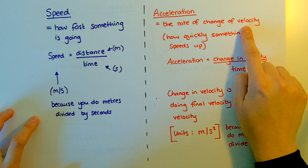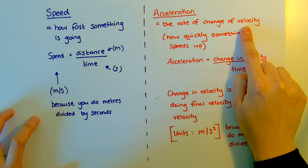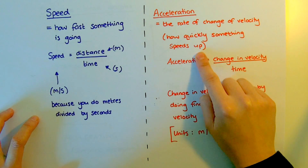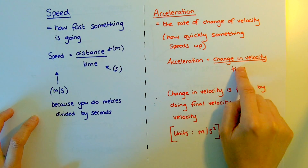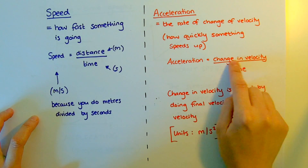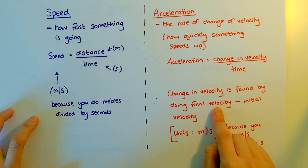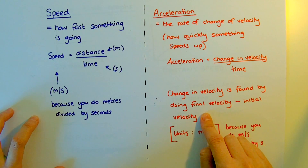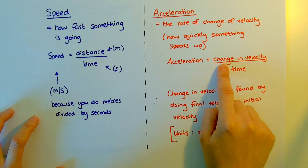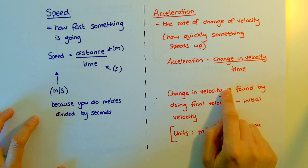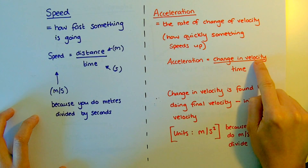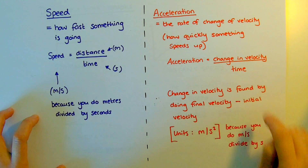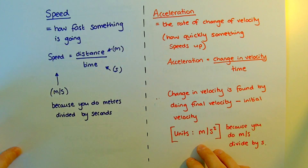Acceleration is the rate of change of speed — so you're speeding up or slowing down, and it's about how quickly you do that. Acceleration is change in velocity divided by time. To work out the change in velocity, you do final velocity minus start velocity. The units for acceleration are metres per second squared, because you're doing metres per second divided by another lot of seconds, which gives you metres per second squared.